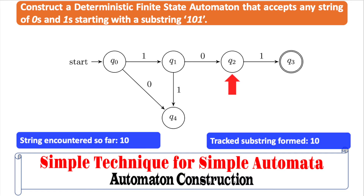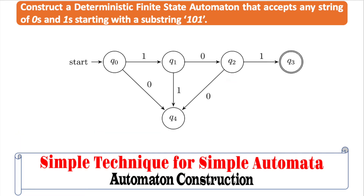Let us continue providing a path for input 0 from q2. There is already a path from q2 if we encounter a 1, but there is no path if we encounter a 0. If we are in q2, we already encountered the substring 10, which might be the substring of the string starting with 101. Since we are forming the string 101 and we already encountered 10, we now want to encounter a 1, not a 0. But if we encounter a 0, then the substring so far is 100, which cannot form a string starting with 101. So if we encounter a 0 from q2, it also goes to the dead state q4, as shown on the screen.